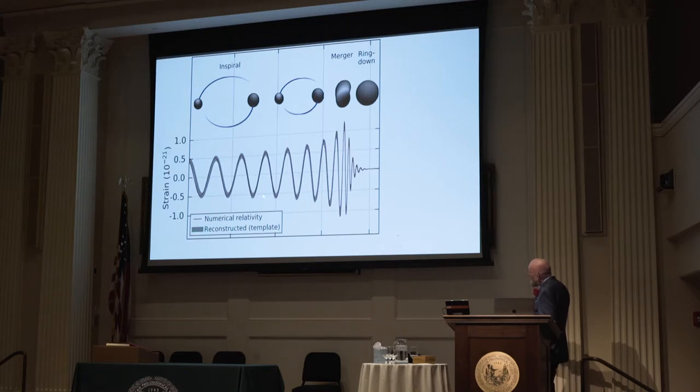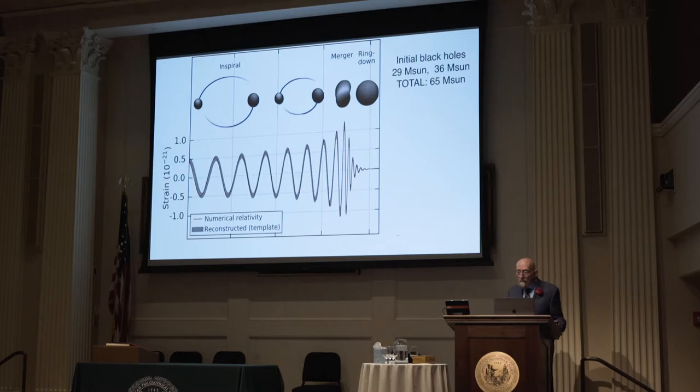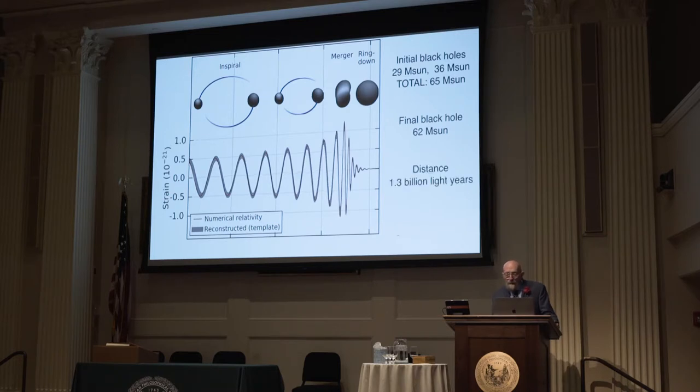The initial black holes were 29 solar masses and 36 solar masses, for a total of 65 solar masses. The final black hole was 62 solar masses — three solar masses gone off in gravitational wave energy. The distance to the source was 1.3 billion light years. We only knew this with confidence because we compared with the numerical simulations, which were crucial. All of the signal from that first source was from the collision and merger, which you cannot analyze by any technique except solving Einstein's equations on a big computer by numerical relativity. These two efforts — computational and observational — had to come together to make this first detection fully understandable.